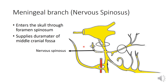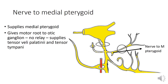The first branch is the meningeal branch, otherwise called nervus spinosus. It arises from the main trunk, re-enters the skull through foramen spinosum, and supplies the dura of the middle cranial fossa. The next branch is the nerve to medial pterygoid, which also arises from the main trunk and supplies the medial pterygoid muscle. It gives out a motor root that passes through the otic ganglion without relay and supplies two other muscles: tensor veli palatini and tensor tympani.